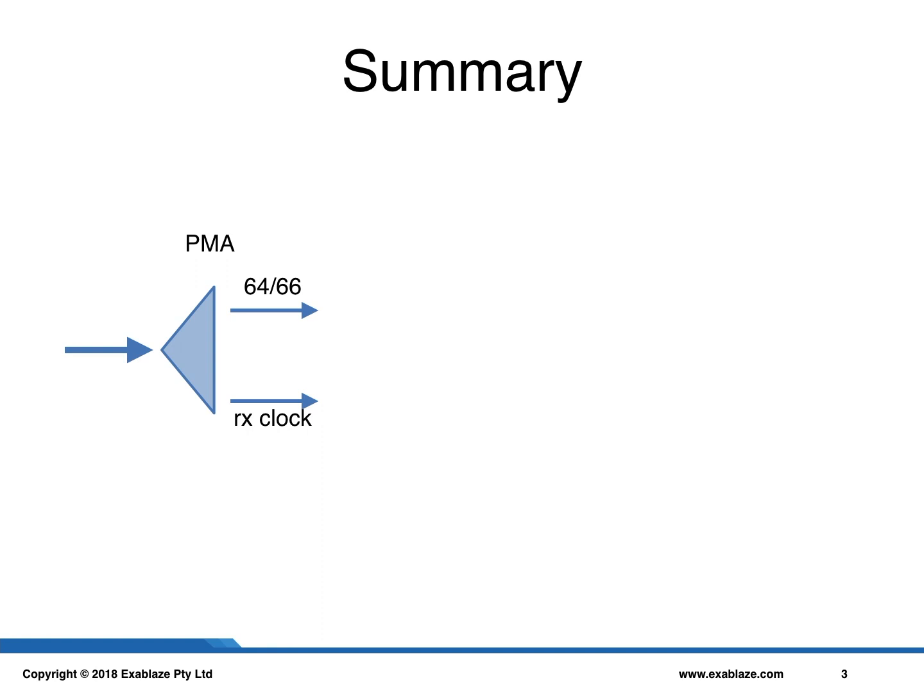The first component is the Physical Medium Attachment Layer, or PMA, otherwise known as a transceiver. This device takes the high-rate connection coming from the network, usually 10 gigabits, and samples it down to a wider and slower bus speed.